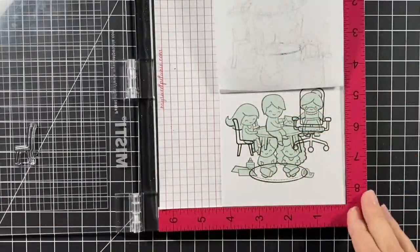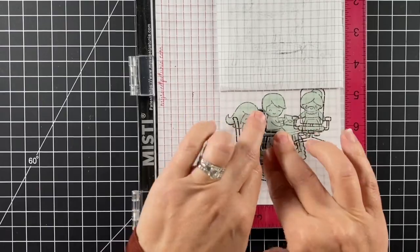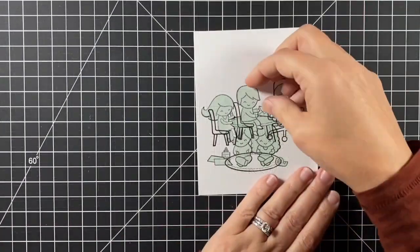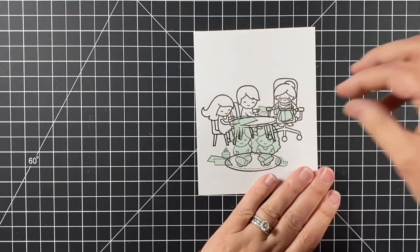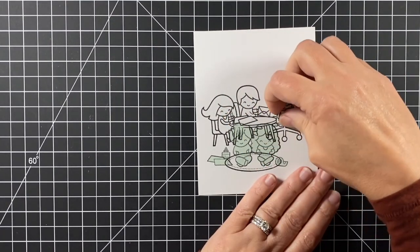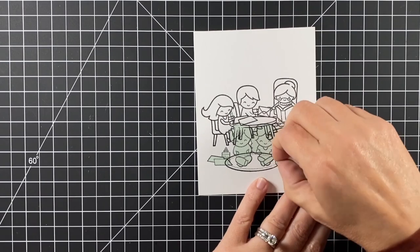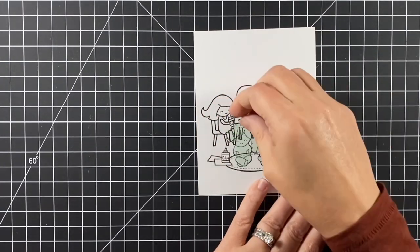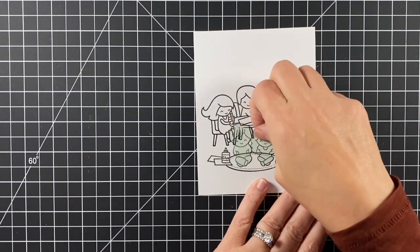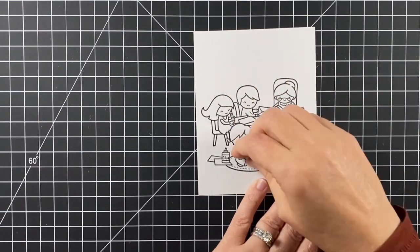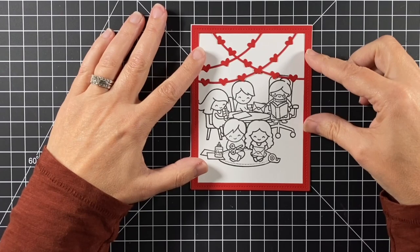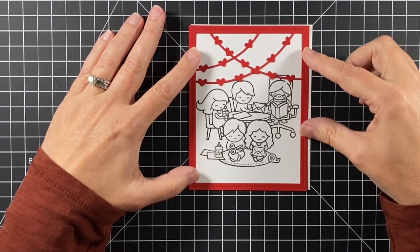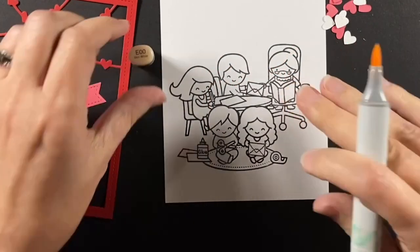Once the entire scene is stamped it's time for the reveal. I'm taking all the masks off layer by layer. That book is in front of the teacher who is sitting on the chair.